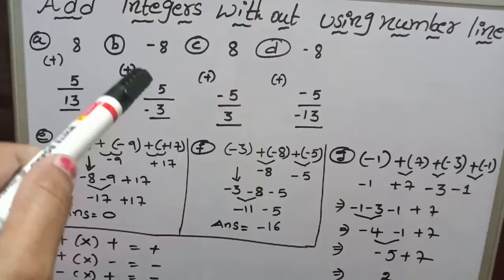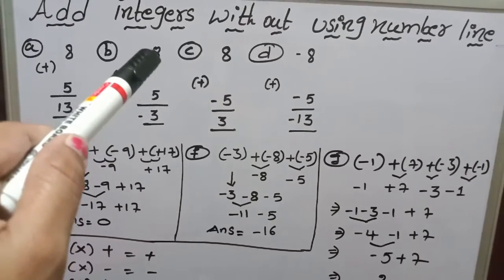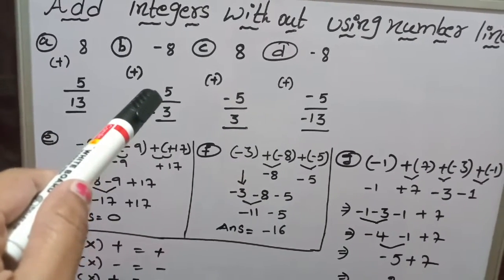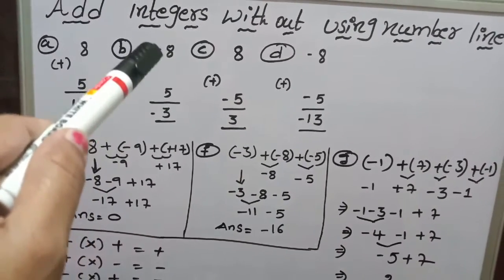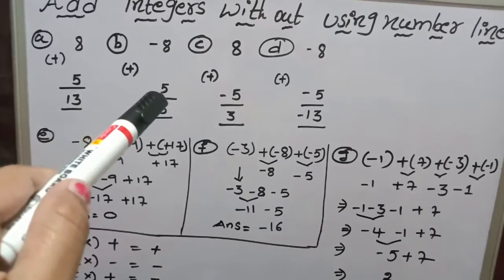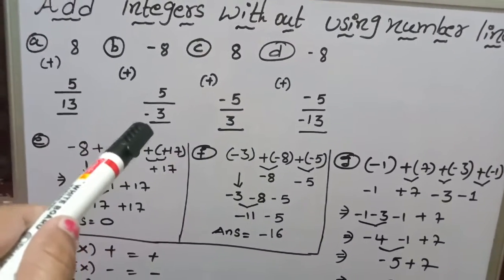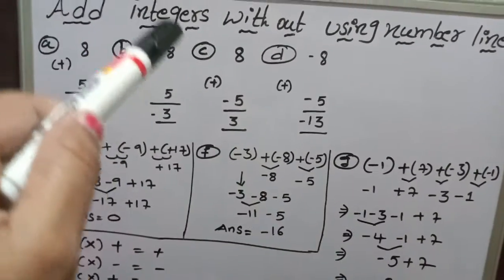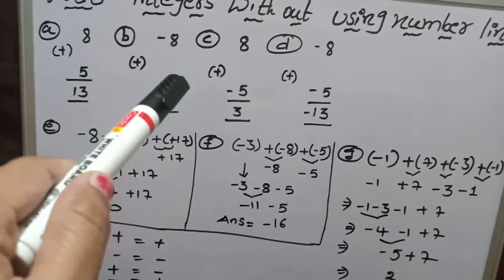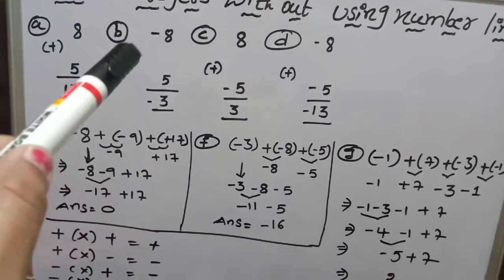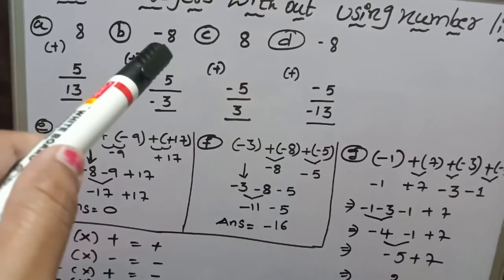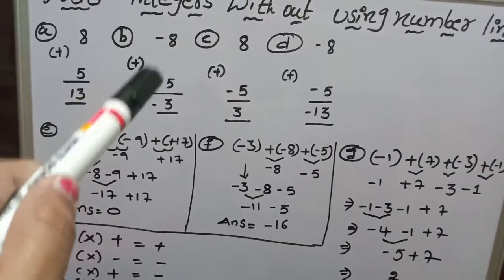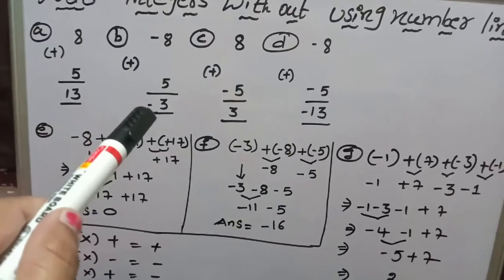Now, if one is positive and the other is negative, in this case we should do subtraction. Minus 8 plus 5 becomes minus 3. Here the symbol depends upon the biggest value of the number. Here 8 and 5 — 8 is the biggest value, and its symbol is negative, so I gave negative here.